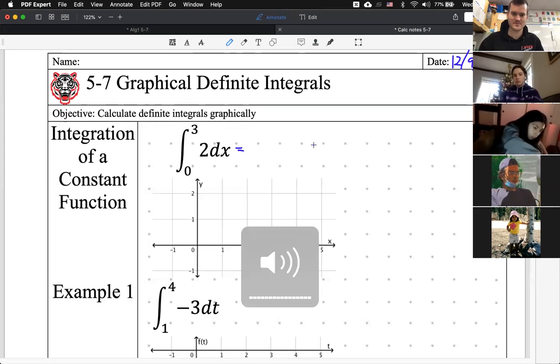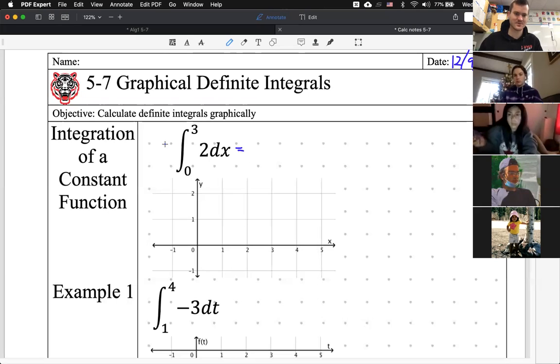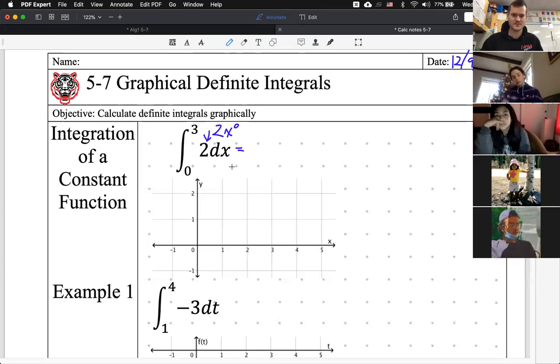What would that just be 2? Not quite. So think of this as, this 2 is really 2x to the power of 0. So the power is going to go up. Oh, so 2x over 1? Exactly. 2x, it goes up to the power of 1, divide down by the 1. So that's just 2x.